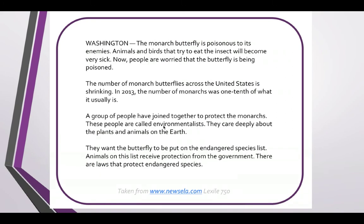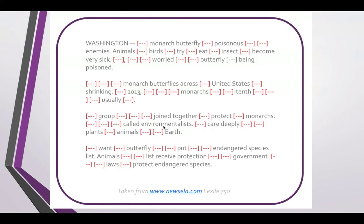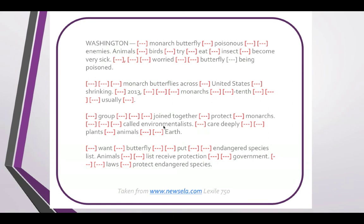This paragraph is a random paragraph taken from NewsELA at the Lexile 750 level. This is the paragraph when you take out all the high frequency words. Looking through it, it's actually pretty hard to understand what it's talking about besides the concept of the monarch butterfly, because we've removed all of those high frequency words.